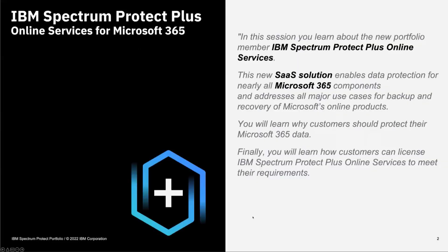In the next few minutes, you will hear me talking about IBM Spectrum Protect Plus Online Services, which is a new SaaS solution provided from IBM and used to protect Microsoft 365 workloads. I will go deeper into the details on which workloads are covered. Furthermore, you will learn on a high level why customers should protect their Microsoft 365 data, in addition to the data protection that is built in with the Microsoft service. Finally, you will learn how customers can license IBM Spectrum Protect Plus Online Services to meet their requirements.